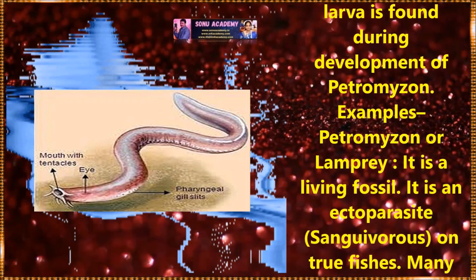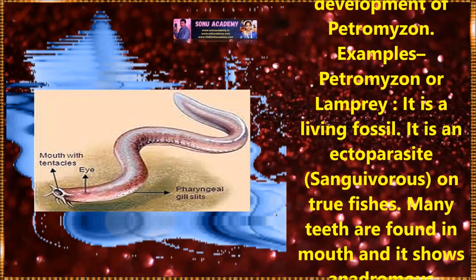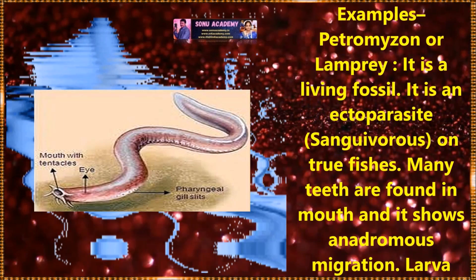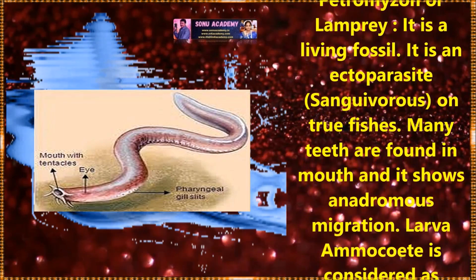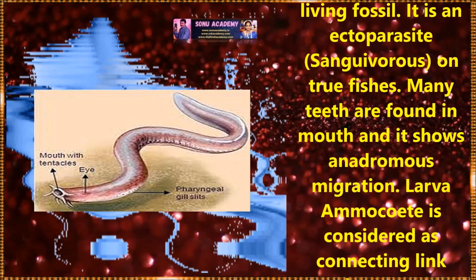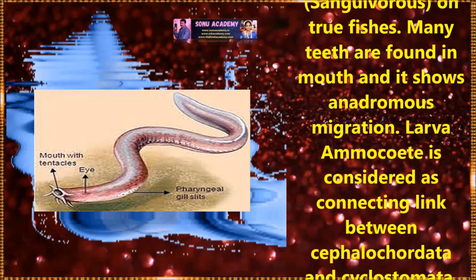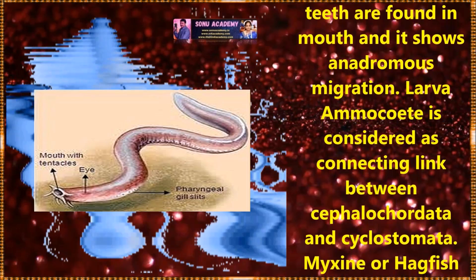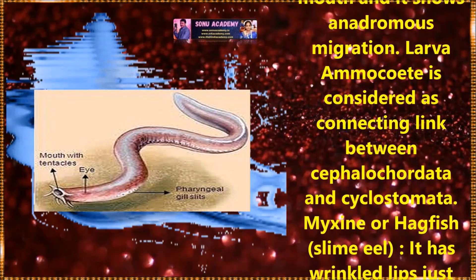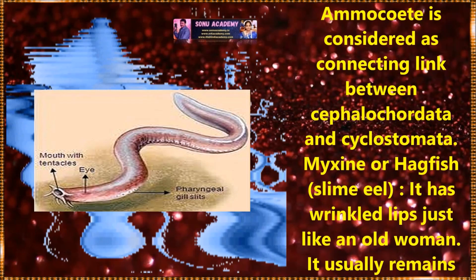Examples of this class are Petromyzon, or lamprey. It is a living fossil and an ectoparasite on true fishes. Many teeth are found in the mouth and it shows anadromous migration. The larva, ammocoetes, is considered a connecting link between the Cephalochordata and Cyclostomata.